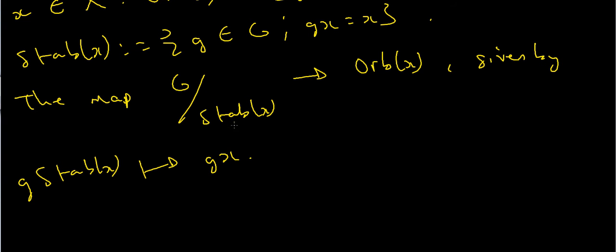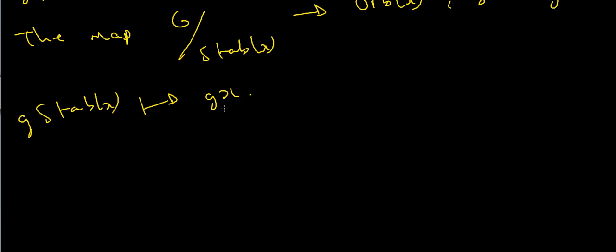And I claim that this map is a bijective mapping. And so one very useful quality of that is since this map is a bijection, then if G is a finite group, so G is finite and it usually is in the context of Platonic solids, it follows that we can do something with the sizes of these things. So it then follows that the size of G mod the stabilizer of X is equal to the size of the orbit of X.